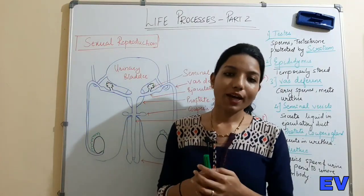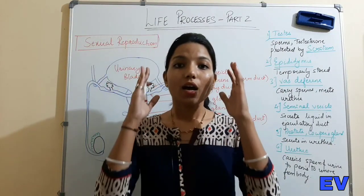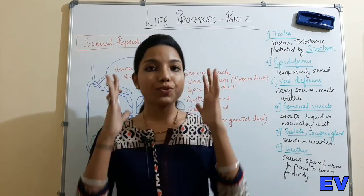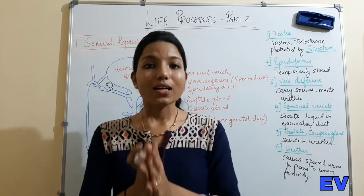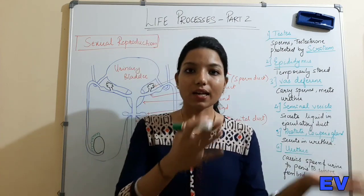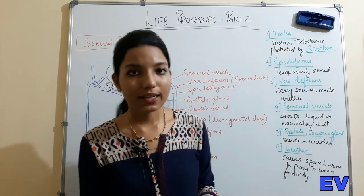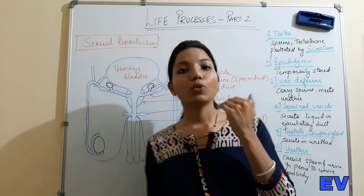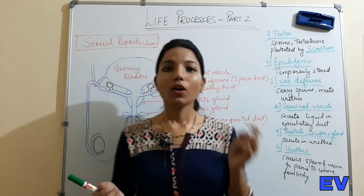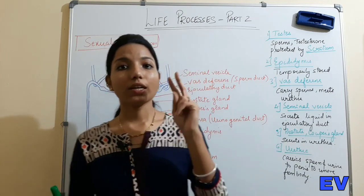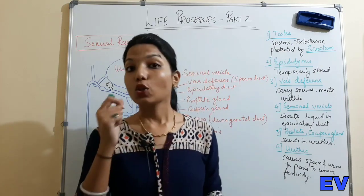Hello students, welcome to the channel Advisors. This video is on sexual reproduction in human beings. We have already seen sexual reproduction in plants and pollination. Now we will see it in human beings. Always remember: sexual reproduction has two processes - gamete formation and fertilization.